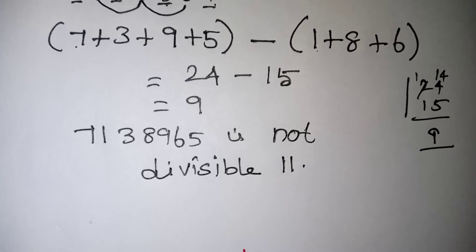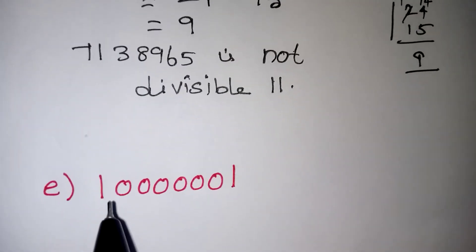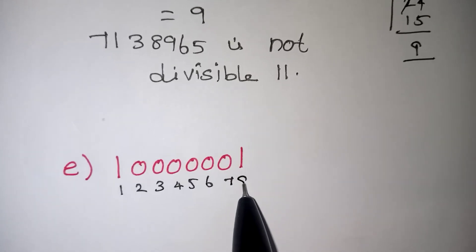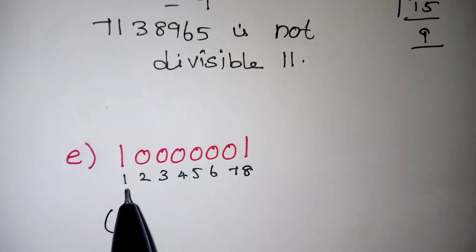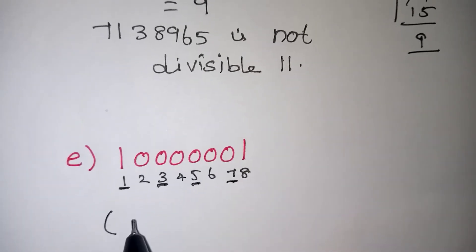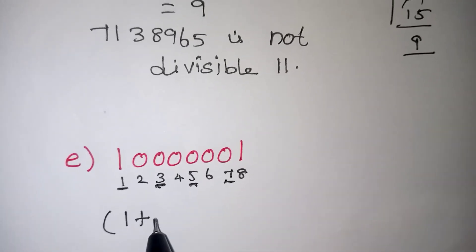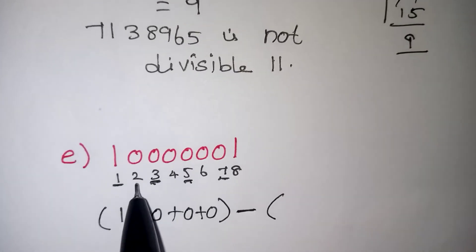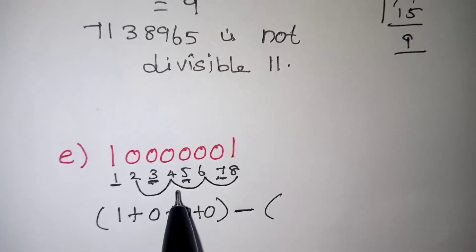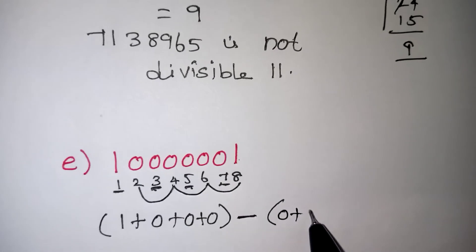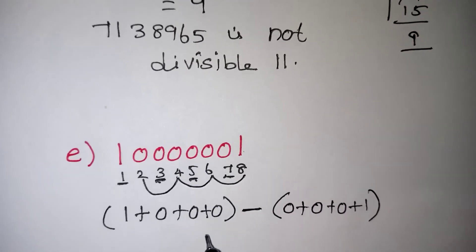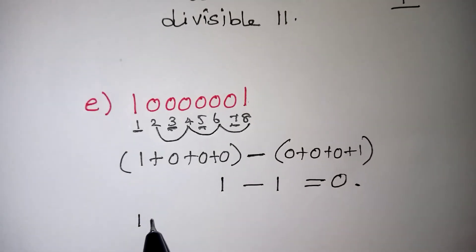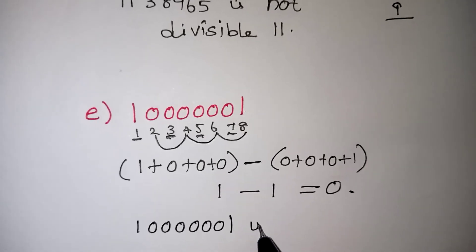We will move on to one more problem. Here we add all the odd places — 1st, 3rd, 5th, and 7th place — all of which are 0s, so the sum is 0. Now for the even places: positions 2, 4, 6 are also 0, and position 8 is 1. So 0 plus 0 plus 0 plus 1 gives 1. Then 1 minus 1 is 0. So this number is definitely divisible by 11.